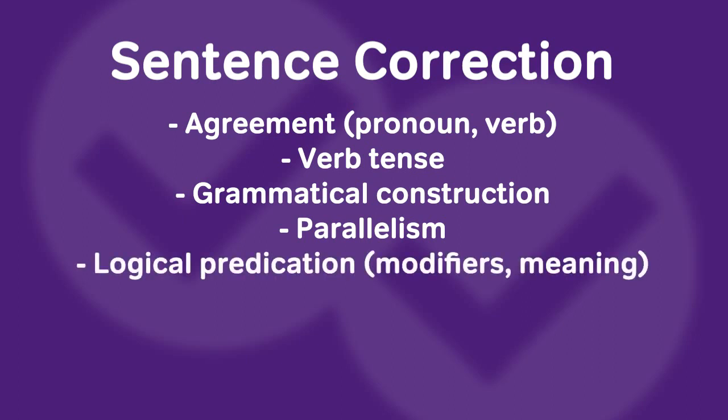Next we have logical predication, which is a tricky one — essentially a modifier question. This has to do with whether our modifiers are constructed grammatically, so are we using the different types of modifiers correctly? But also whether our modifiers make sense: are they describing what we'd like them to describe to make a sentence that is logical?